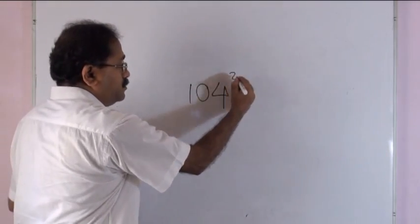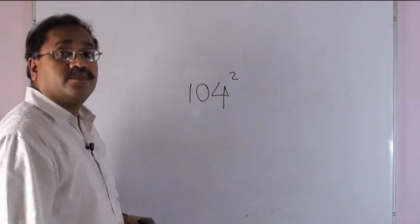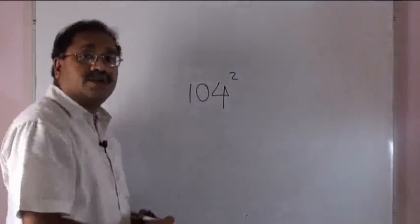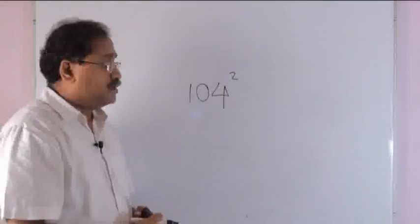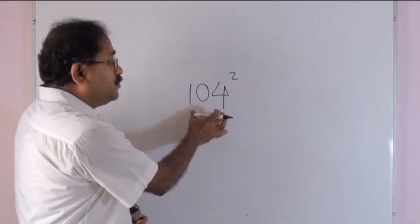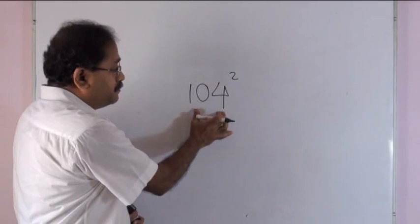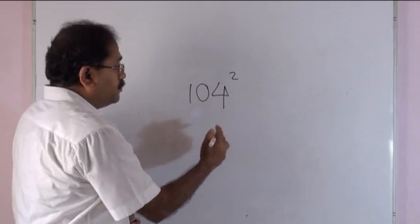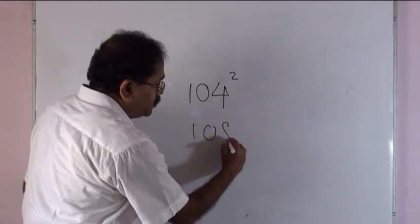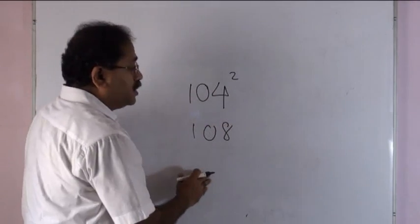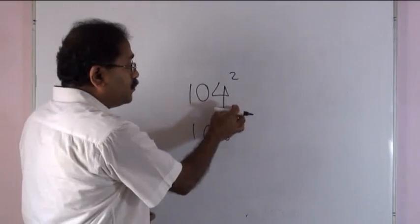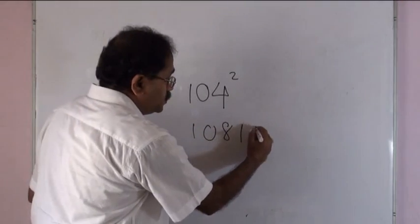104 squared — a number which is closer to 100 but greater than 100. Here, 104 is 4 more than 100, therefore 104 plus 4, that is 108, followed by 4 squared, that is 16.